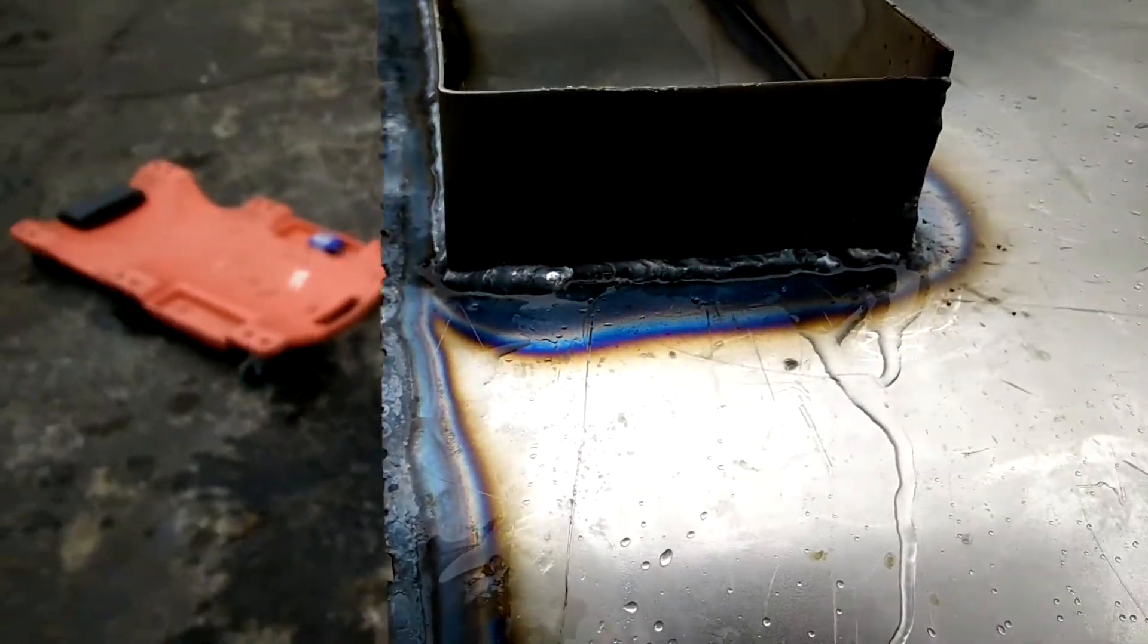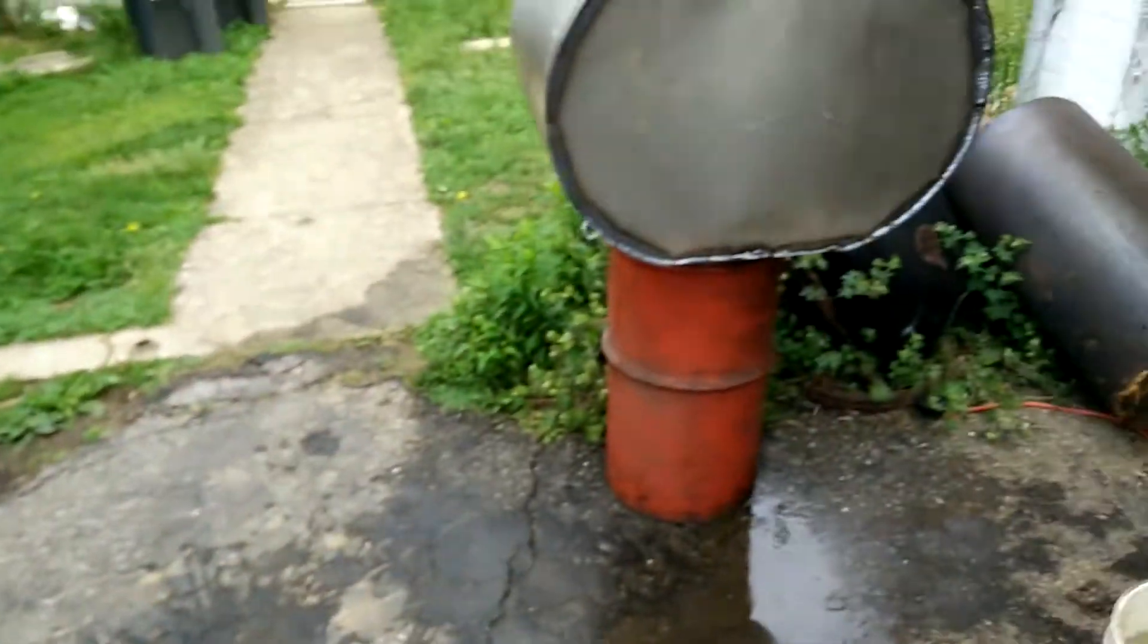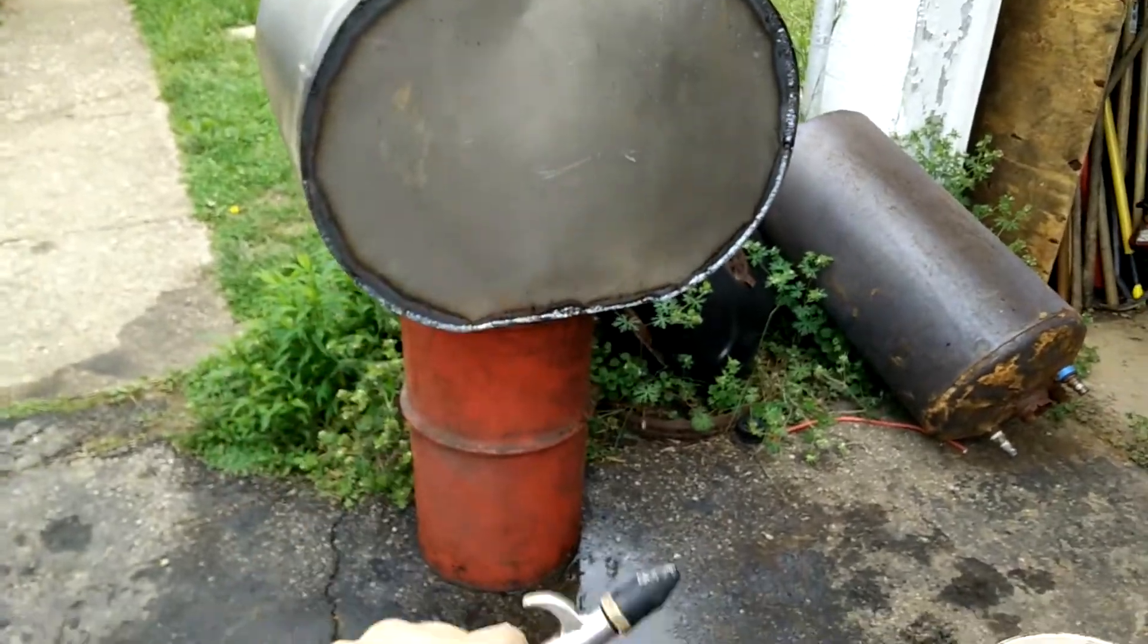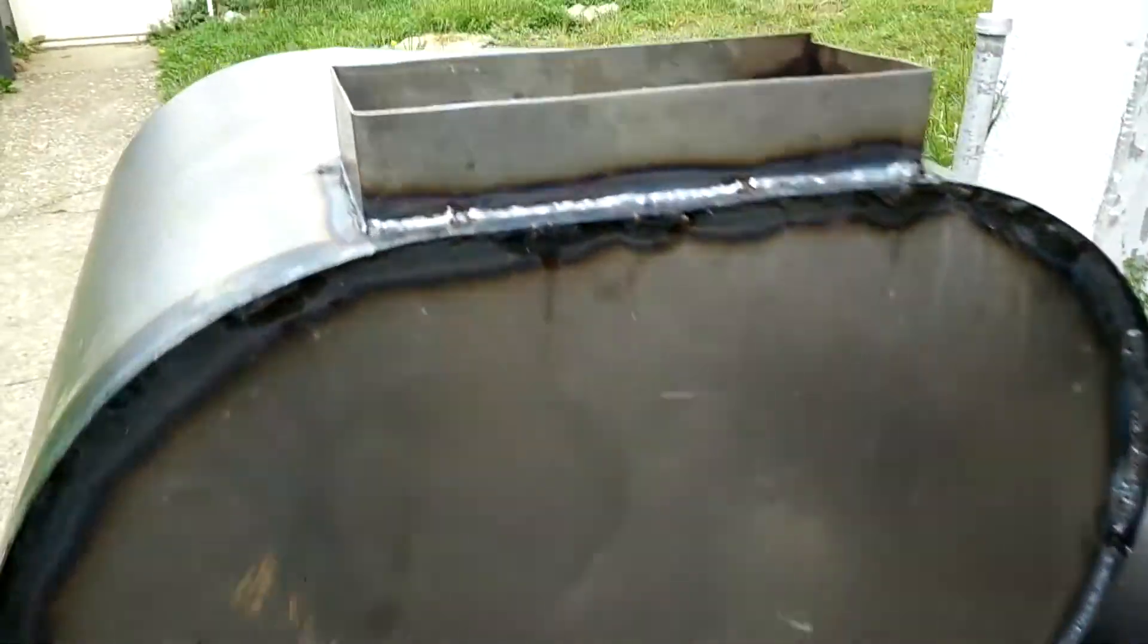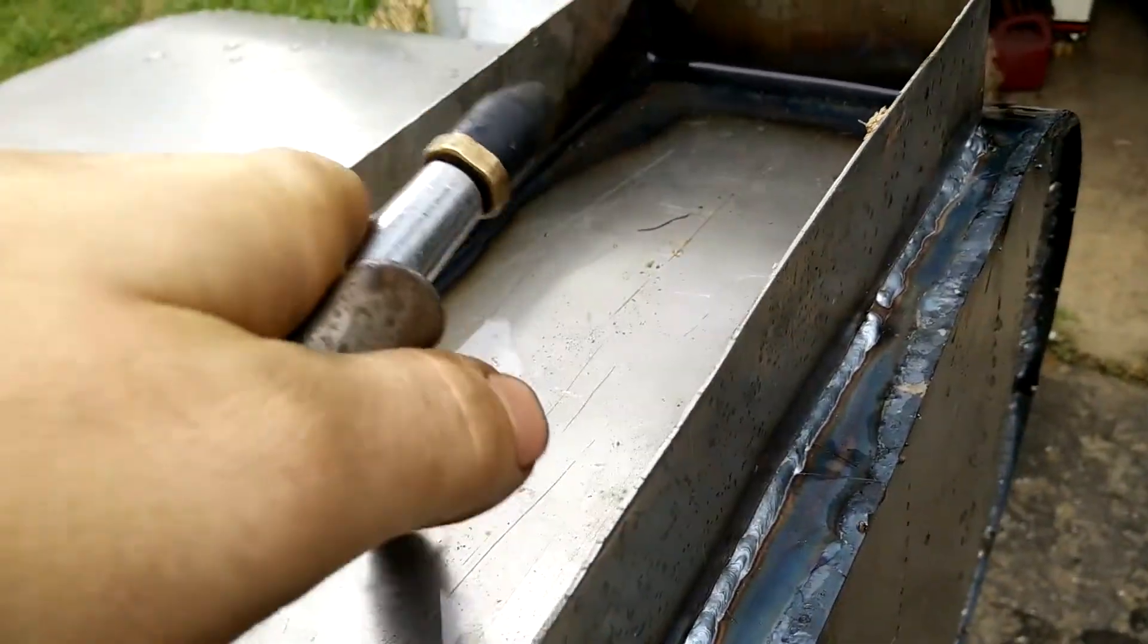So I'm going to show you what I do for leaks. You'll need some water, an air hose, and then the weld oriented in such a way that you can fill it with a certain amount of water.